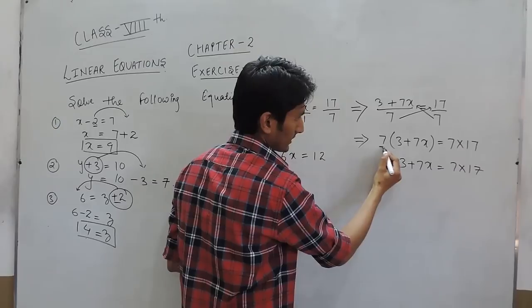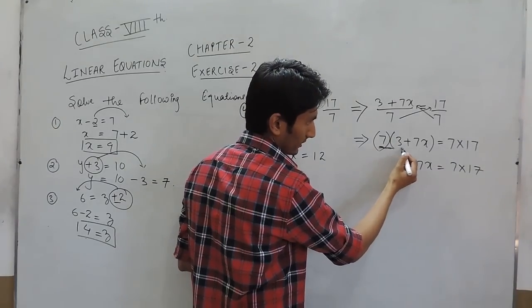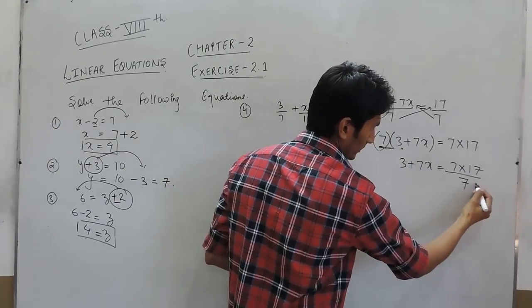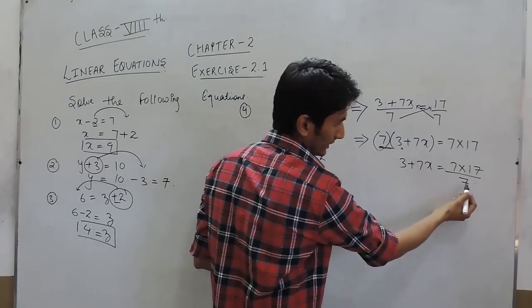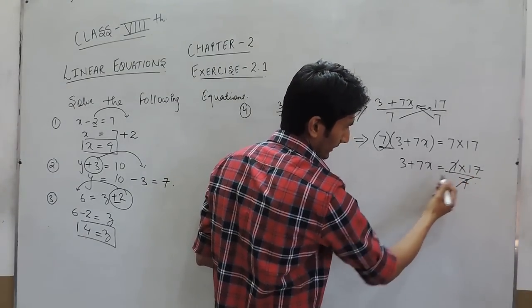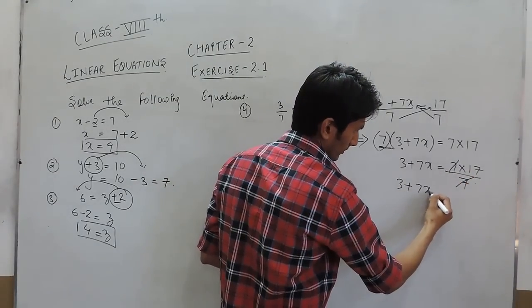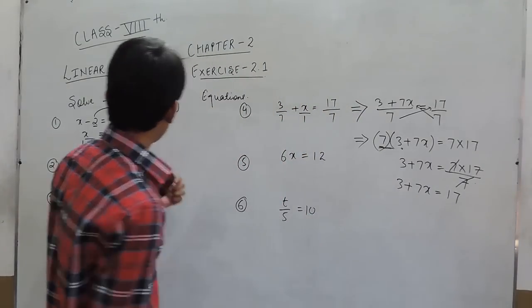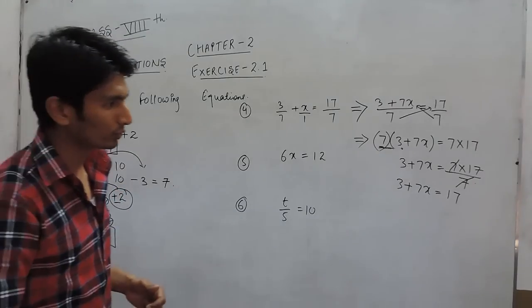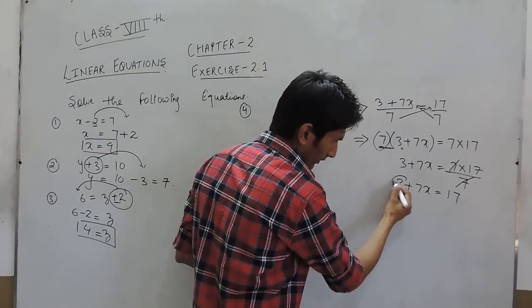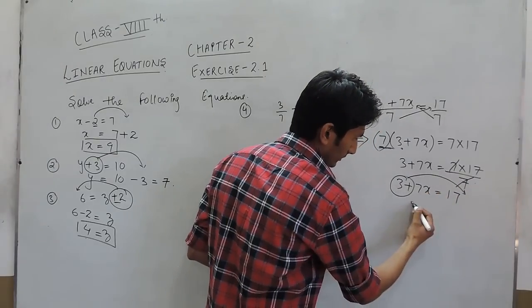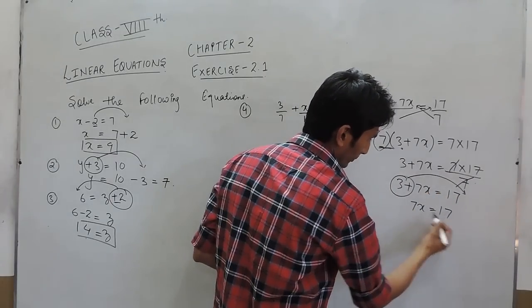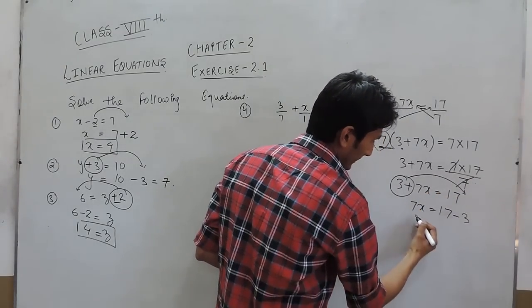We have to cross multiply it. Because this is in multiplication with this term, when it shifts to that side we will divide the term and we can cancel it out. Now this equation is the same and we have to shift the constant term to that side. Positive 3 will become negative.